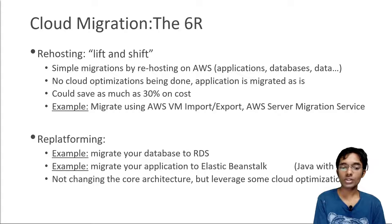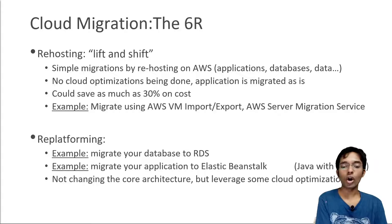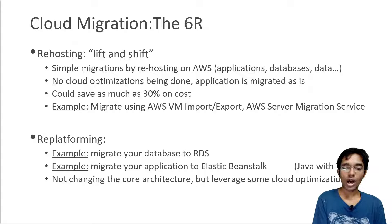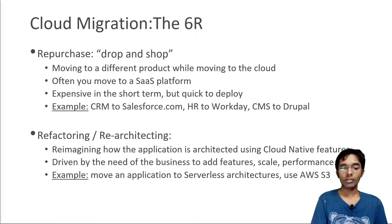Another re-platforming example is migrating a Java application to Elastic Beanstalk. It's running locally on your systems, and you want to leverage Beanstalk because it has high availability, a managed load balancer, and good upgrade processes. You leverage Java with Tomcat as a base stack environment to migrate your application to the cloud. Here, we are not changing the core architecture — we are just leveraging cloud optimization and keeping the same runtime. We are not rewriting the application, just running it on a different platform.